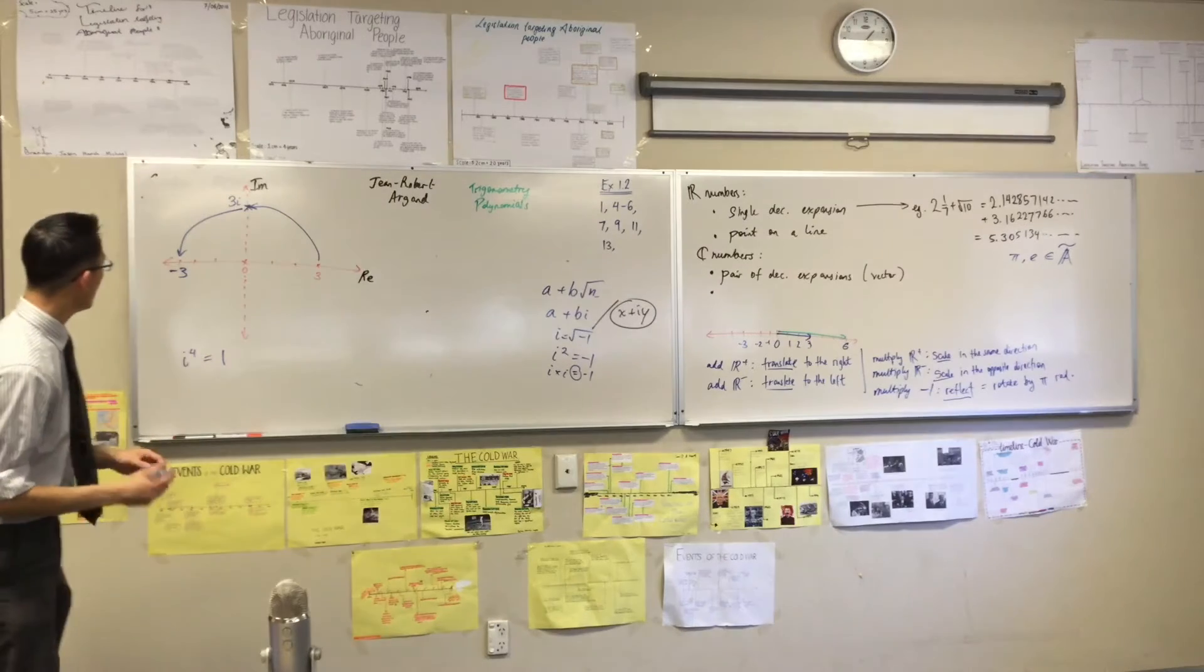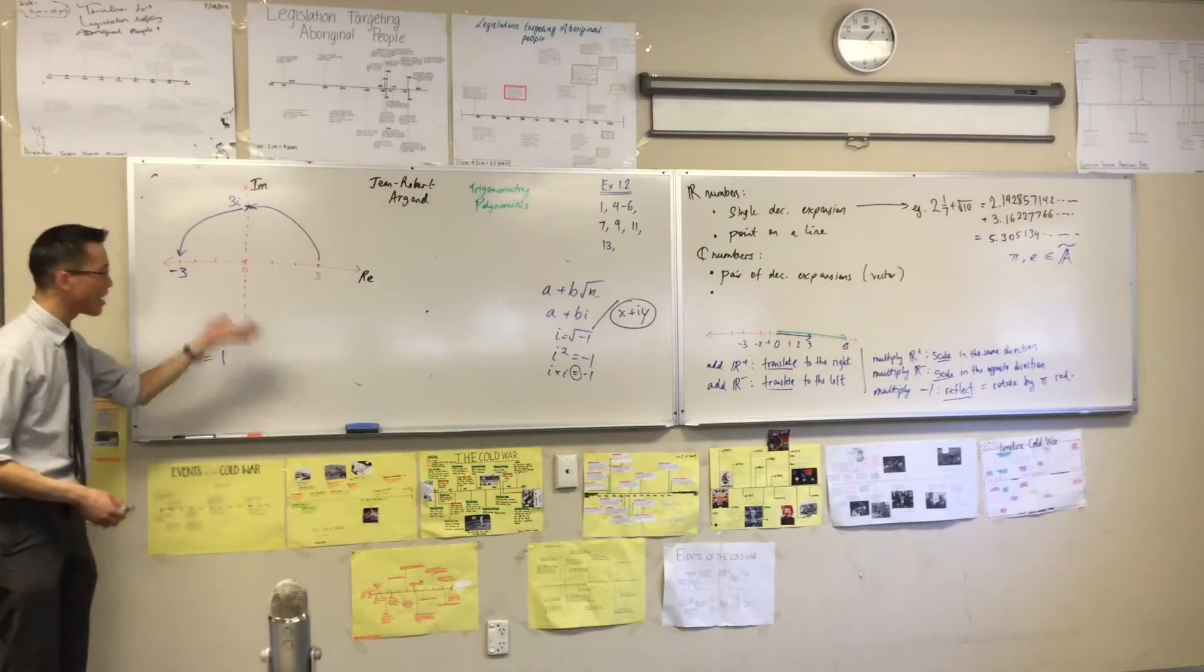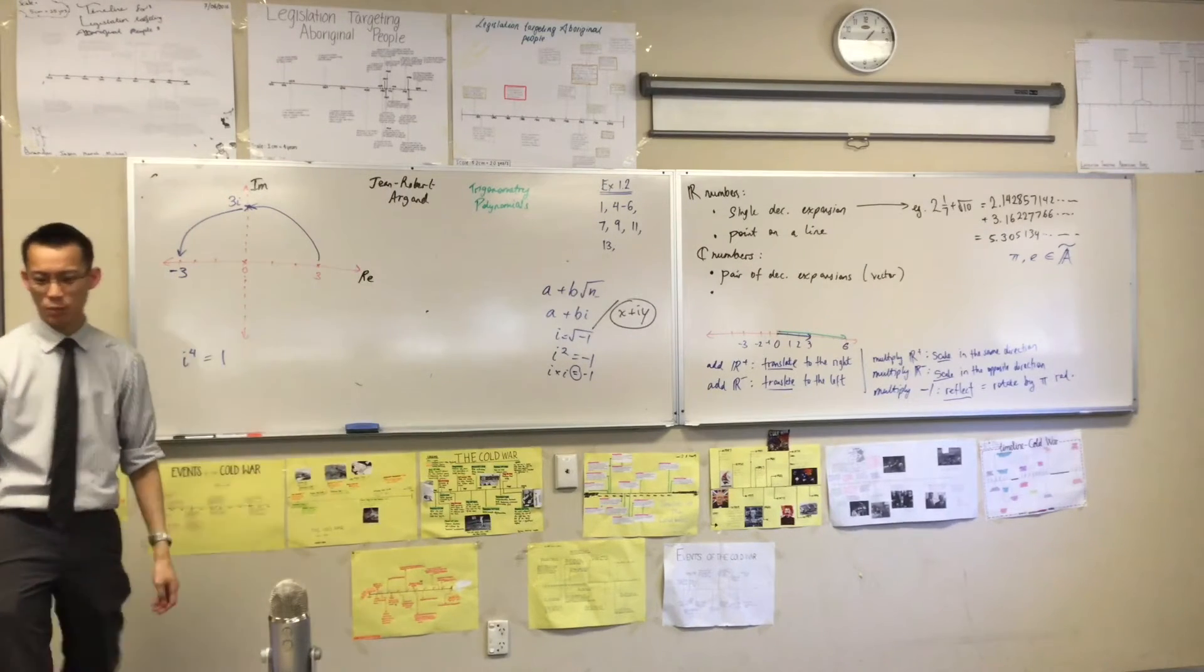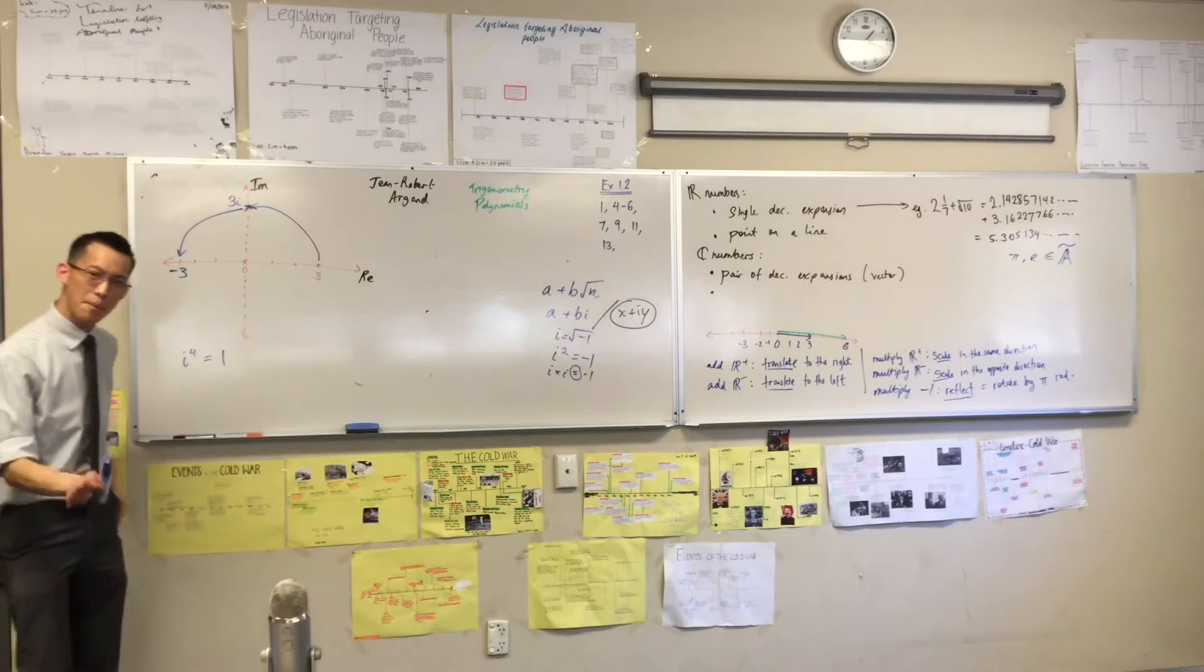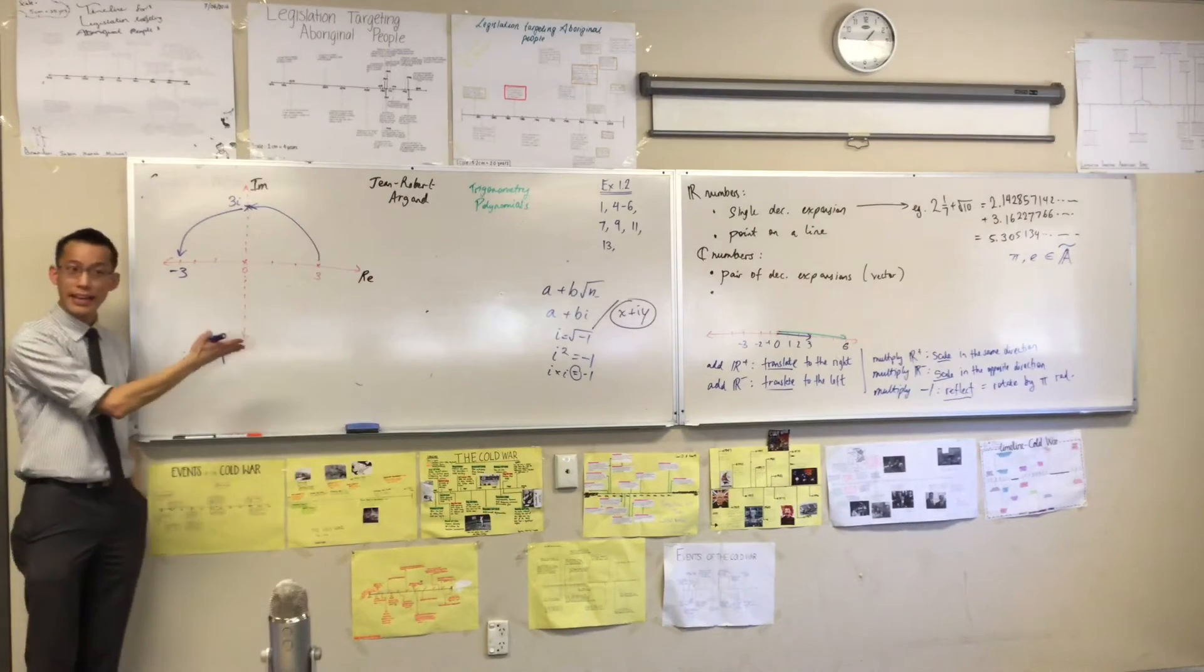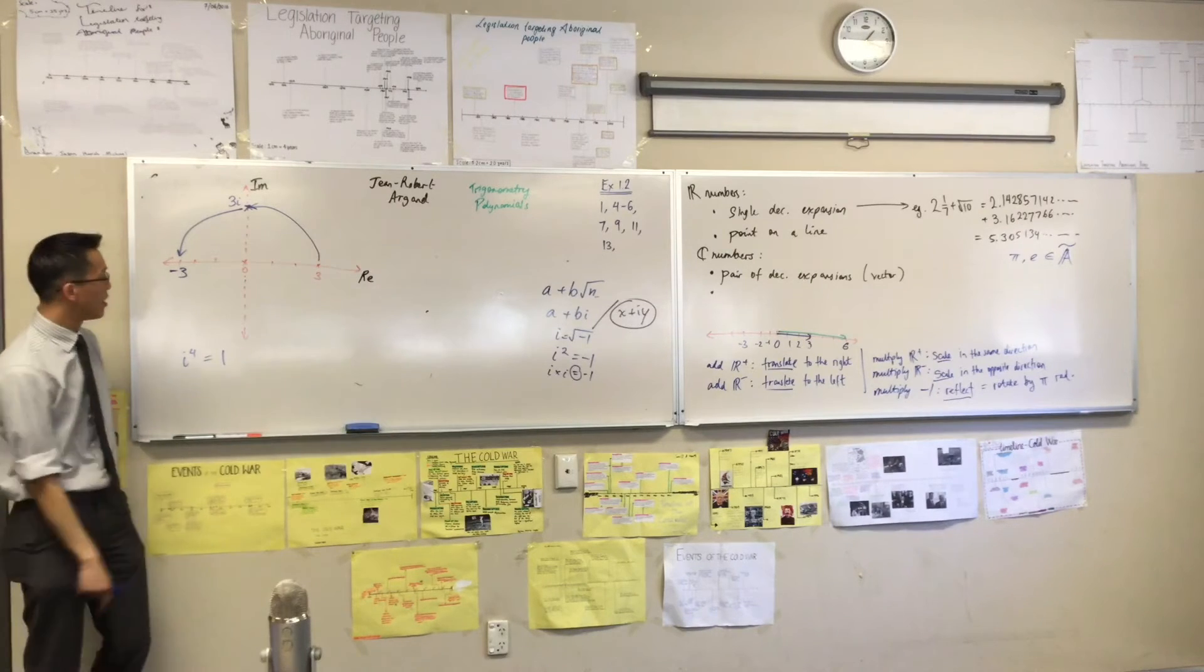Now while you've got an Argand diagram there, let's hijack a little bit, let's put some extra stuff on there. I can now represent any number I like onto this Argand diagram. Any complex number.